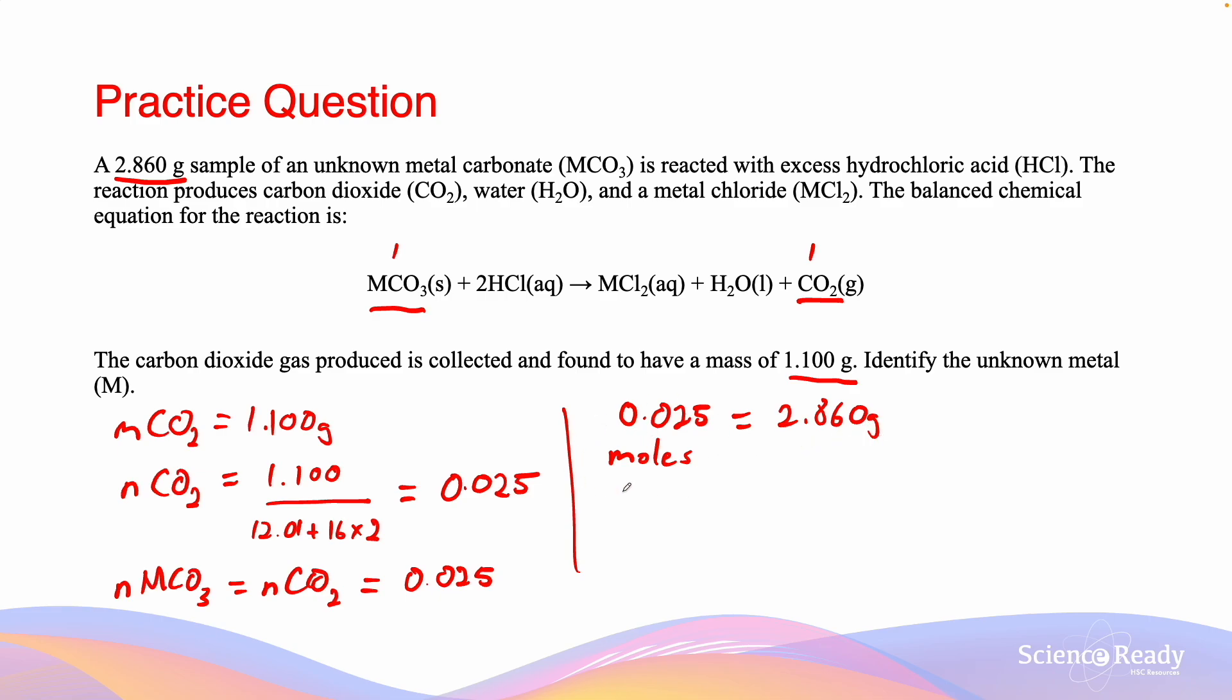Since we know the number of moles and the mass of that number of moles, we can find the molar mass because molar mass equals mass divided by number of moles. The molar mass of MCO3 equals 2.860 divided by 0.025, which equals 114.426 grams per mole.